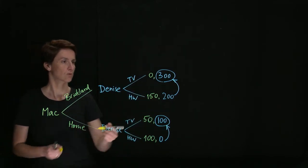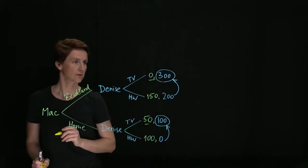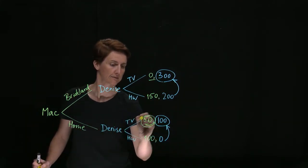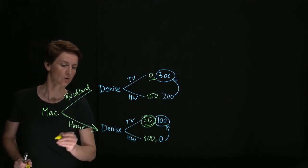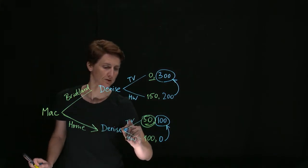And so by comparing these two payoffs, Mac picks this so that he will choose to keep Denise at home and she will choose to watch TV.